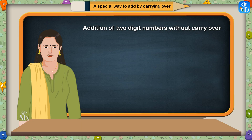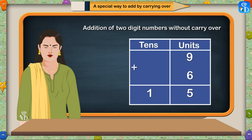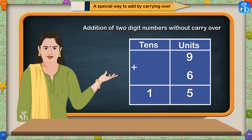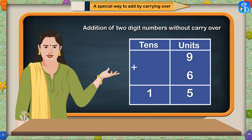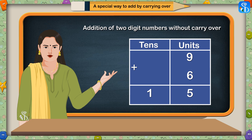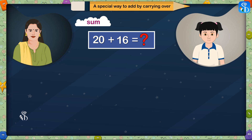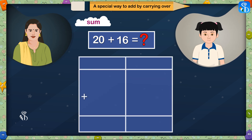Addition of Two-Digit Numbers Without Carryover. Children, so far we have learnt the addition of single digit numbers. Now we are going to add two digit numbers without carryover. Let us solve this sum. The sum is 20 plus 16 is equal to — first I will write these numbers in vertical display.